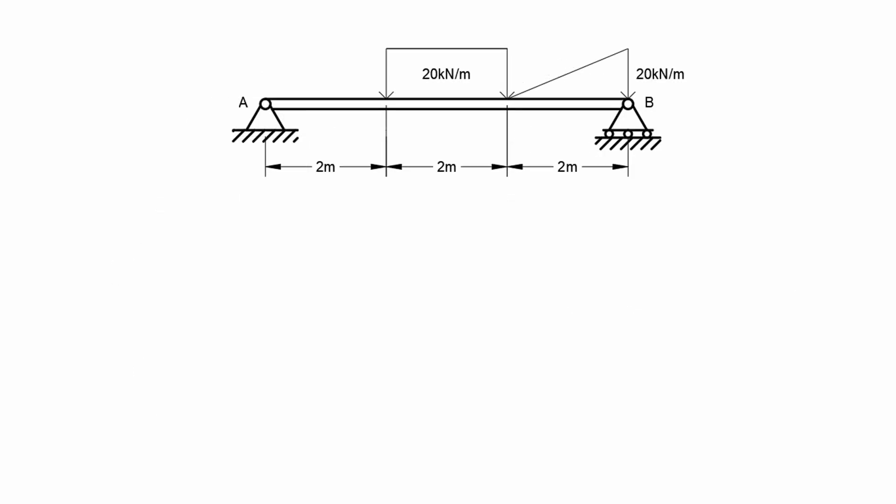To determine the corresponding shear and moment diagram for different types of load, let's have this example. In this example, we have a uniform load, a uniformly varying load — commonly called a triangular load — and a concentrated load represented by the reactions in the beam. The first step in drawing the shear and moment diagram is to solve for the reactions. Our example is a simply supported beam, so we take the summation of moment at B to determine the reaction at A, taking clockwise as positive and counterclockwise as negative.